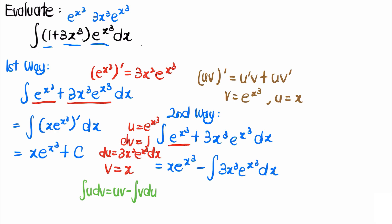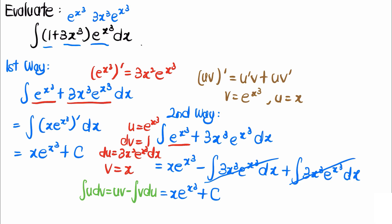That remaining integral is exactly the same as the second term in the original integrand, so both terms cancel. Therefore the whole expression is just x times eˣ³ plus C — the same answer as before.